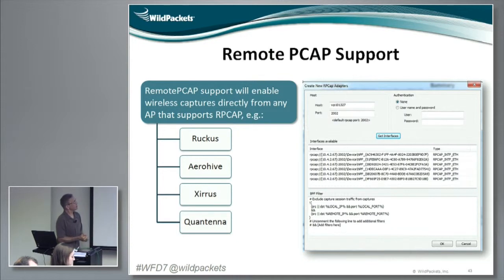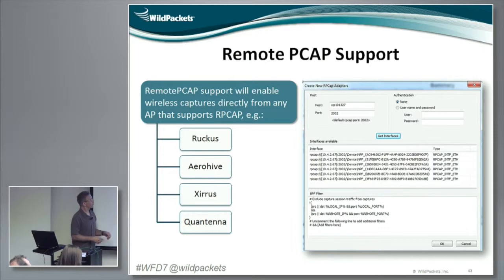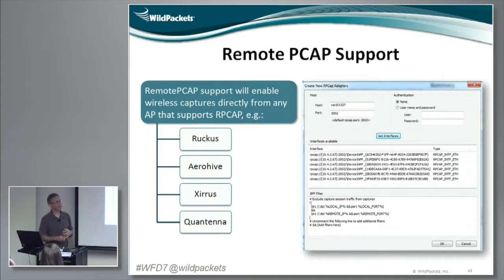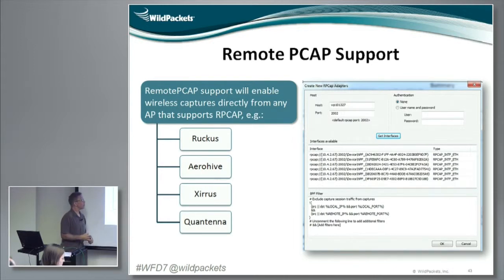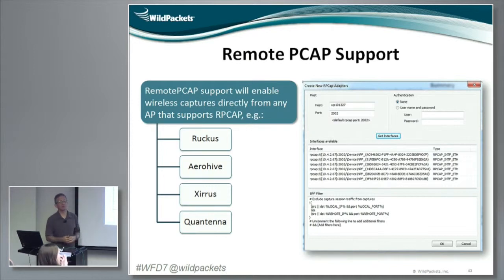We haven't talked that much about this. We talked about TCP dump as a collection method and remote adapters. Remote PCAP also opens up people like Ruckus, Arrowhive, and Aerohive to us. Remote PCAP is something that's typically inside the library of Linux files that are going to be put on an access point. Not every manufacturer exposes remote PCAP, so either we need to contact them or you need to contact them to see if they do. We know Ruckus and Arrowhive do — we've tested both, with their 11N APs, because we have those.